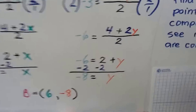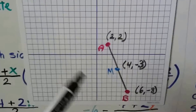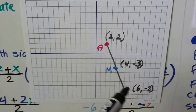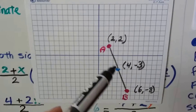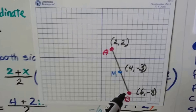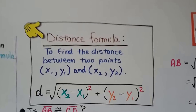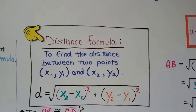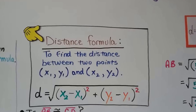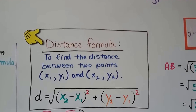If we look at this on a coordinate plane, we have point B at (6, -8). Here's the distance formula — you should write this down. Don't confuse this with the distance-rate-time formula; that's the uniform rate formula. The distance formula helps us find the distance between two points: (x₁, y₁) and (x₂, y₂).